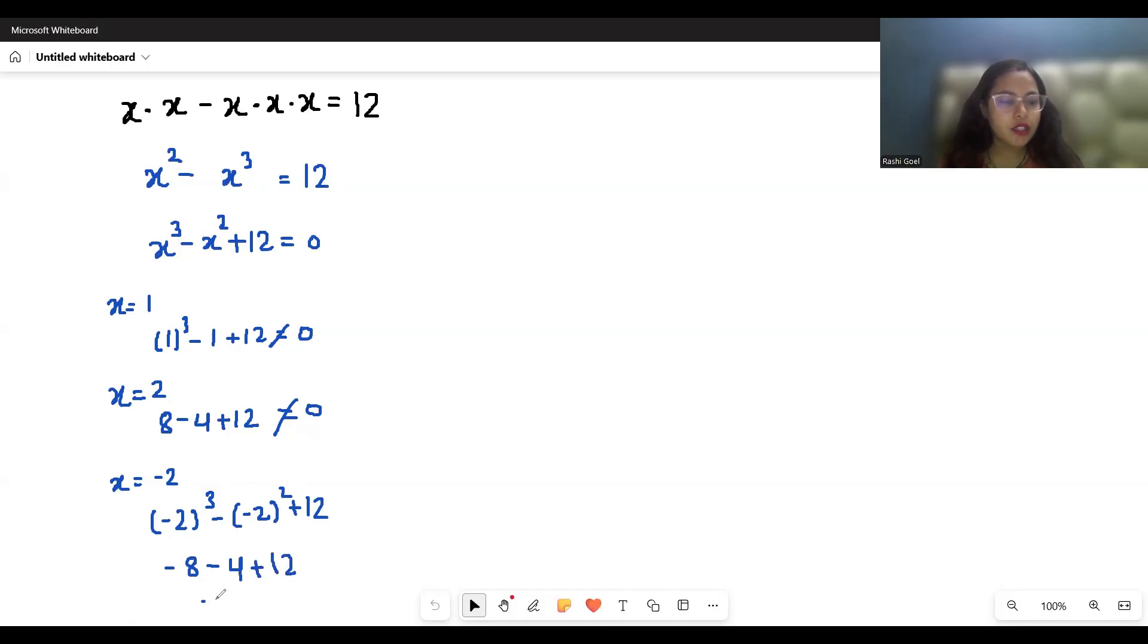So it becomes minus 12 plus 12, which equals 0. So one of the factors is x equals minus 2, and it becomes x plus 2. So x plus 2 is one of the factors, and from the equation x cubed minus x squared.